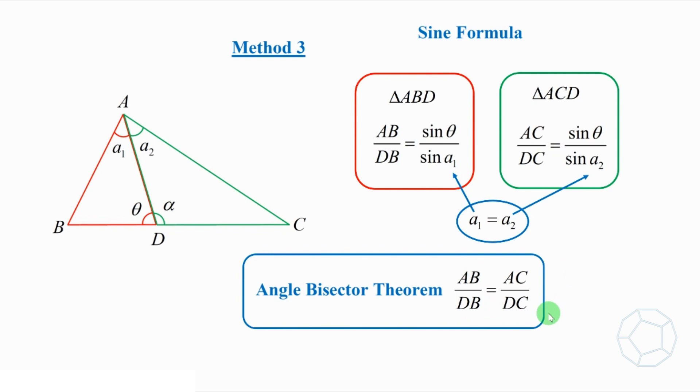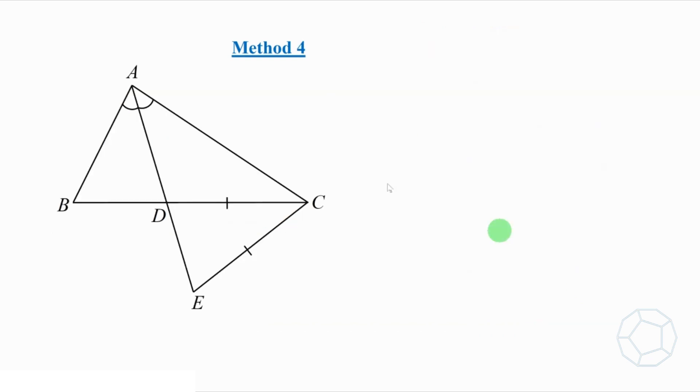We have approached the theorem using three different tools. Actually, there's a fourth method to prove that. Let me give you some hints. Refer to this figure, AD is extended to E so that CD is equal to CE. Then, you can prove the theorem using similar triangles as well.